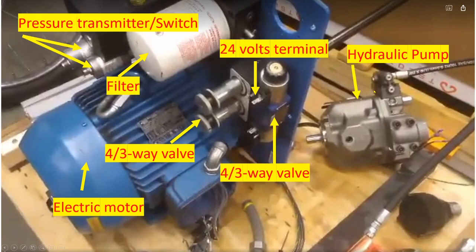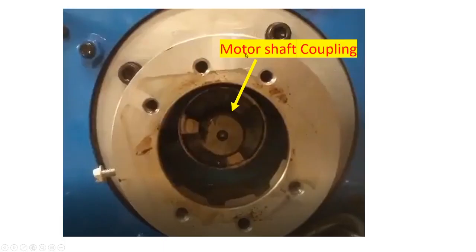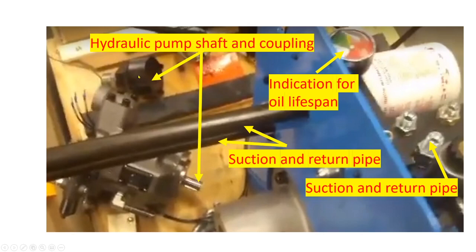24 volts terminal for directional control valve. This is the flow control valve. This is the hydraulic pump, electric motor, motor shaft coupling. This is the coupling of the pump, the shaft of the pump. This is the indication for oil life span. Green should be good and red should be bad.